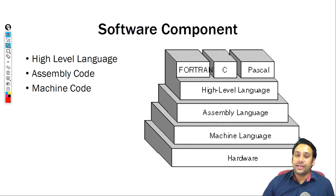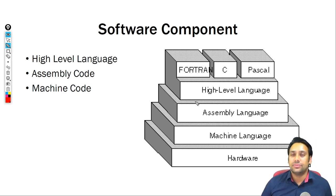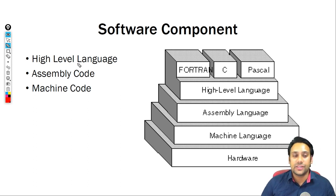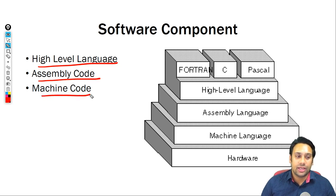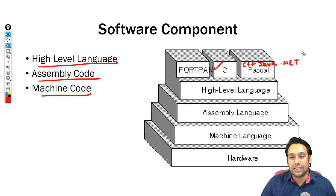As a software component, you have languages. You have a high level language, you have assembly code, and you have machine code. For example, C is a high level language, C++ is a high level language, Java is a high level language, .NET is a high level language.